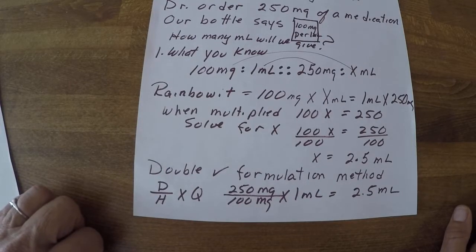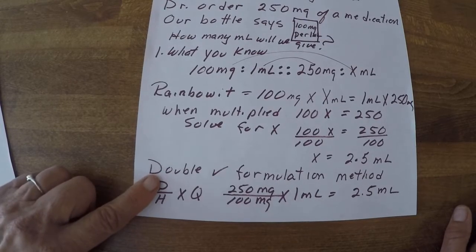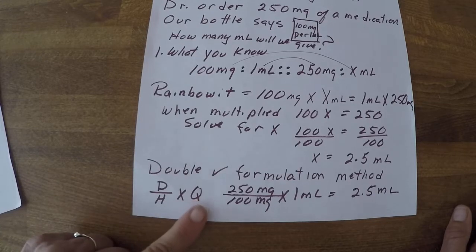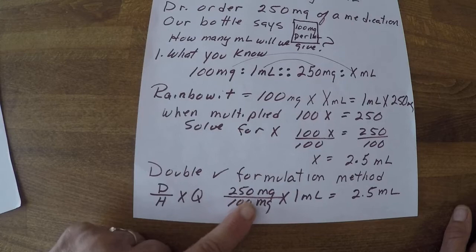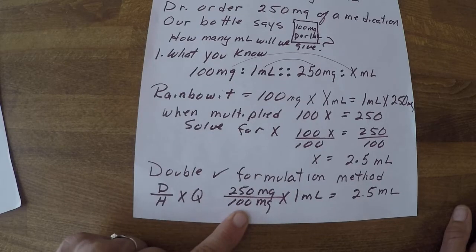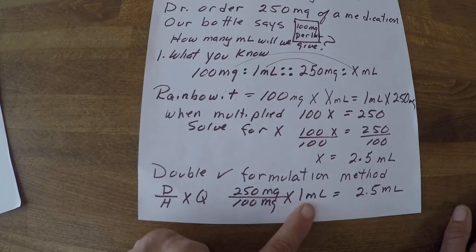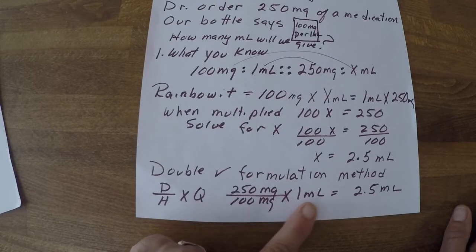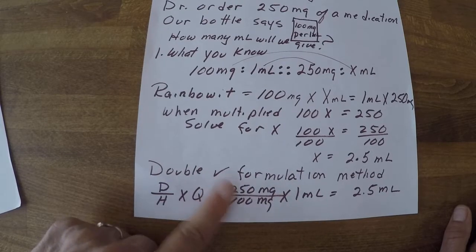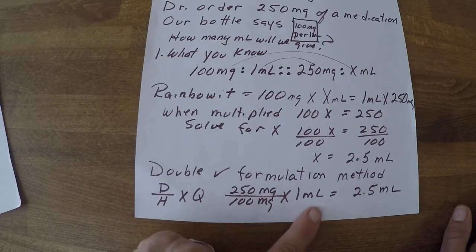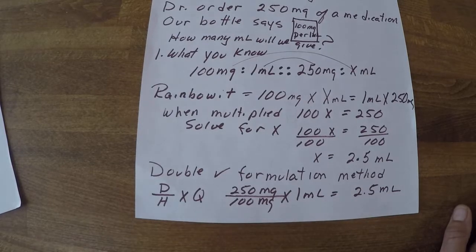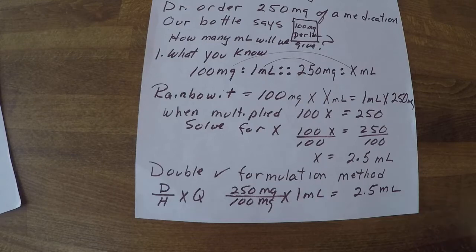Let's double-check with our formula method, which is desired over have times quantity. Our desired dose is 250 milligrams; we have 100 milligrams per 1 ml. So 250 divided by 100 times 1 ml gives us 2.5 ml — same answer. That's ratios. I hope that helps. Stick with it, just practice. You got this.